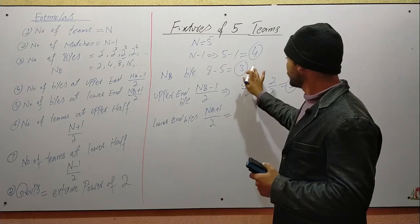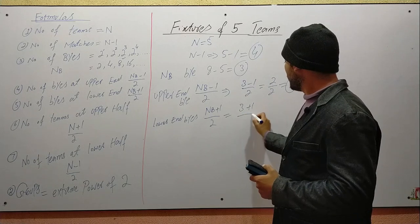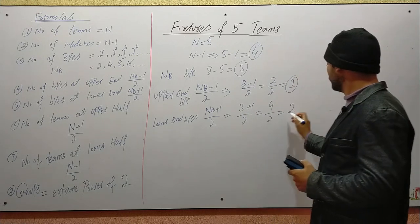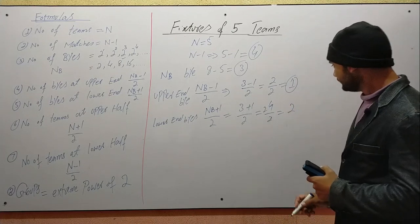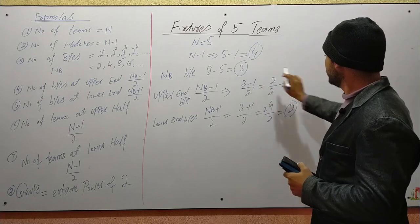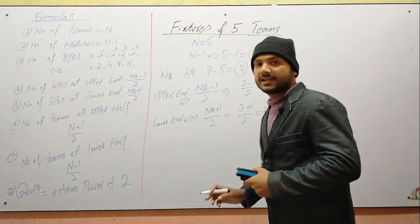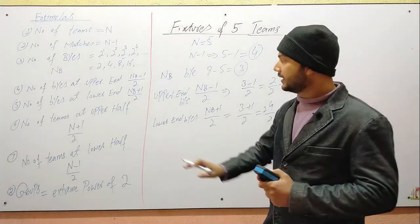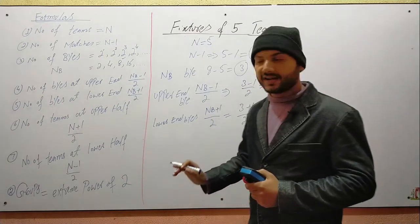Let's calculate. Number of upper byes equals 3 plus 1 over 2, which is 4 over 2, equals 2. Number of lower byes equals 3 over 2, which gives 1. So total byes: 1 upper and 2 lower, total is 3. After that, we have to see how many teams are placed at the upper end and lower end.